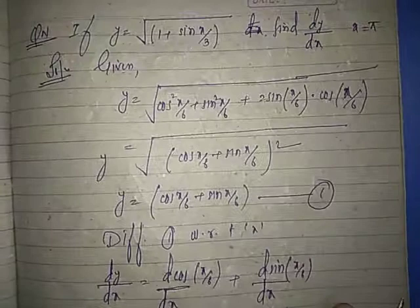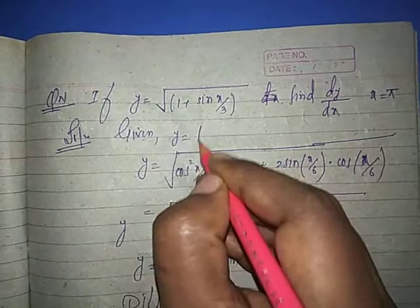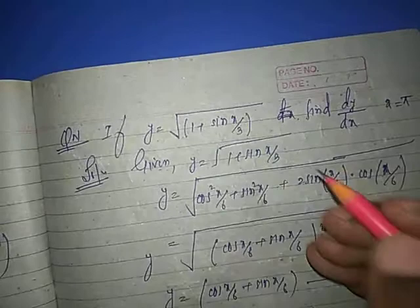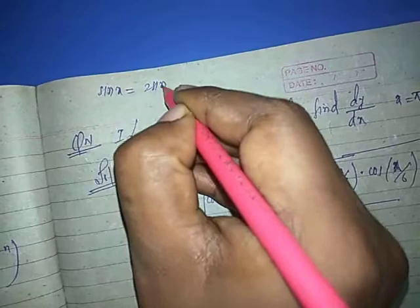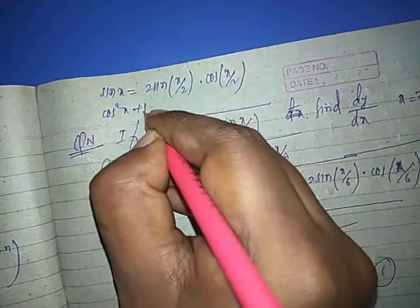Second sum: if y is equal to root of 1 plus sin x by 3, find dy by dx. Given y is equal to 1 plus sin x divided by 3, all to the power half.